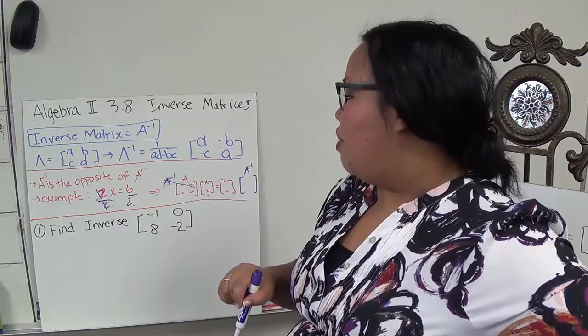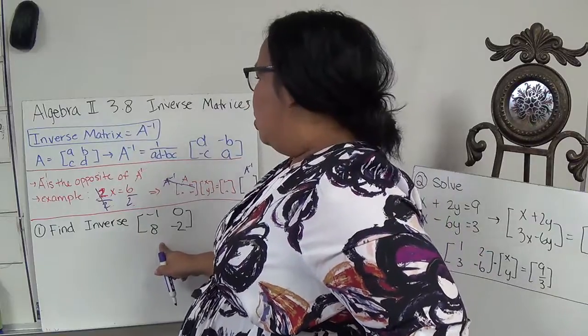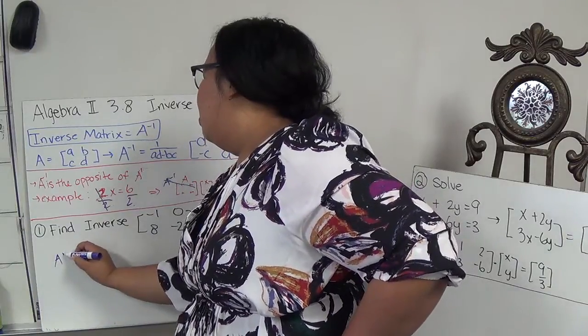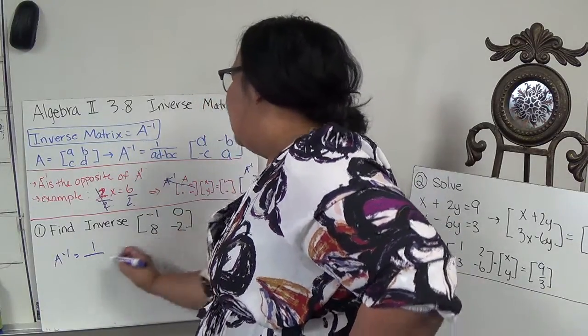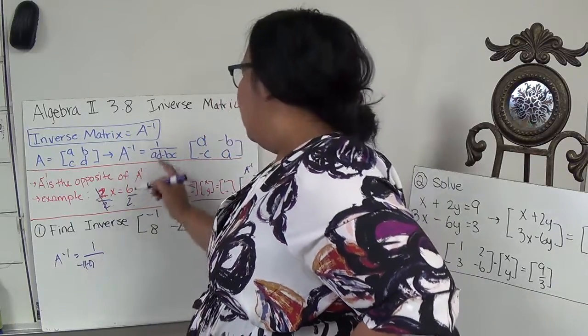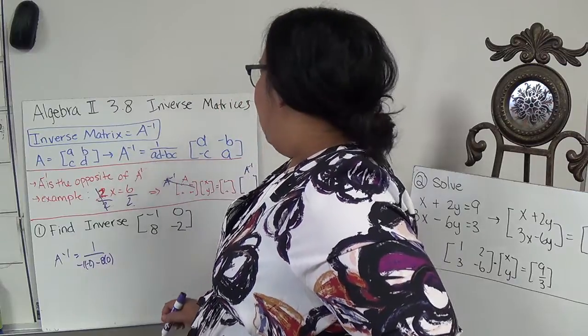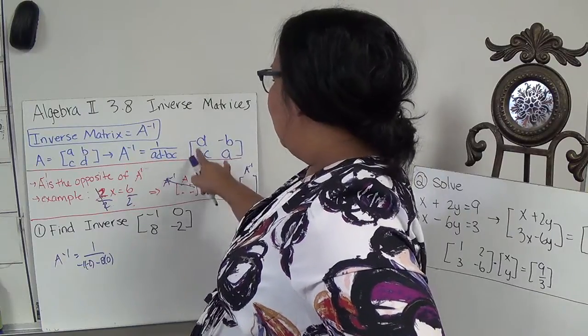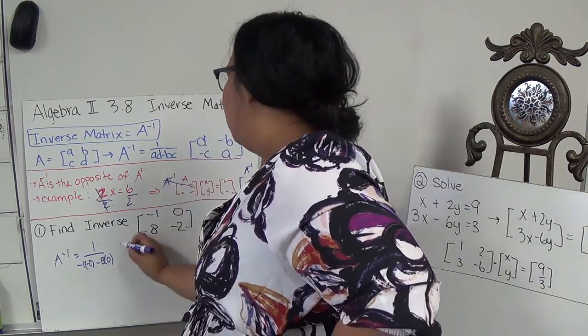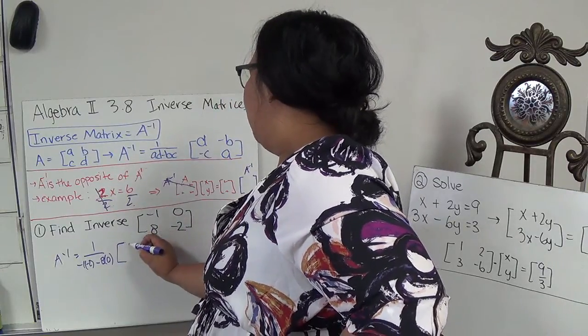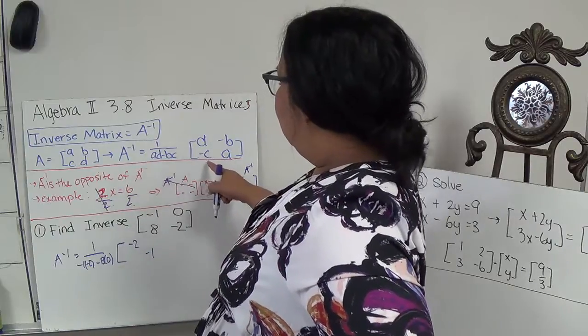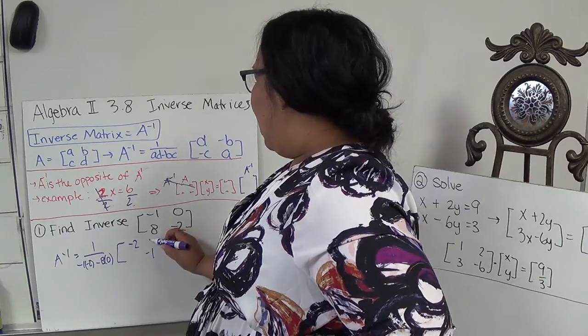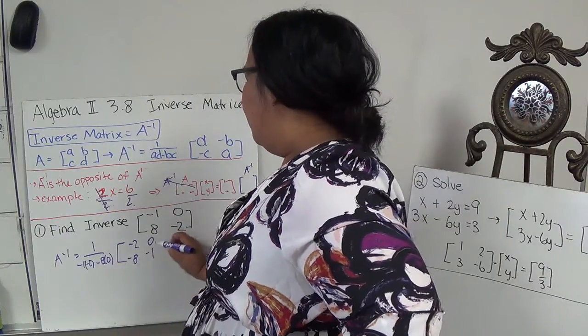So first, let's just practice finding the inverse. So this is my A, so I need to find my A to the negative 1. So my A to the negative 1 would equal 1 over ad minus bc. So negative 1 times negative 2, minus 8 times 0. And then they flip-flopped. So they took this and switched it. So this is negative 2 and this is negative 1. And then they took c and b and made each one negative. So 0 and negative 8.